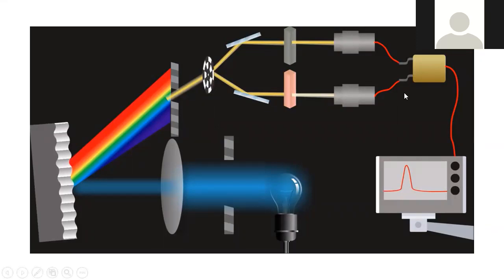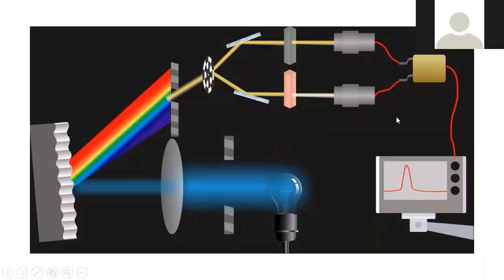The monochromator is made of three things. First, you have the entrance slit — this is where polychromatic light enters through two holes. After that, you have the mirror, which is a simple lens. After that, you have the grating. Grating is an instrument used as an advanced prism; you can also use a prism. Then you have the exit slit on top. So the monochromator is made of four things: entrance slit, lens, prism or grating, and exit slit.